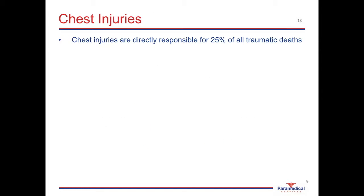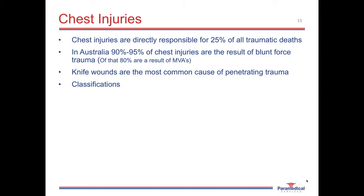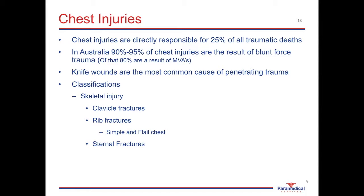Chest injuries are directly responsible for 25% of all traumatic deaths. In Australia, 90 to 95% of chest injuries result from blunt force trauma, 80% of which were from motor vehicle accidents, and knife wounds are the most common cause of penetrating thoracic trauma. Classifications of chest injury include skeletal injuries such as clavicle fractures, rib fractures, flail chest and sternal fractures; pulmonary injuries such as pulmonary contusions and pneumothoraces; injuries to the heart and great vessels; and diaphragmatic injuries.